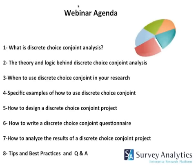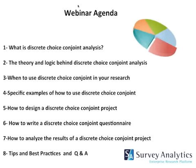On today's webinar agenda, we're going to be speaking about seven or eight different things: what is a discrete-choice conjoint analysis, the theory and logic behind it, when to use it in your research, specific examples, how to design a project, how to write a questionnaire, how to analyze the results, as well as some tips and best practices. We'll open up the floor at the very end for any questions.